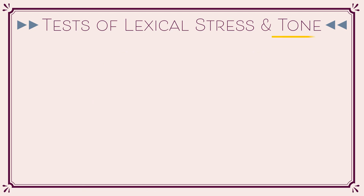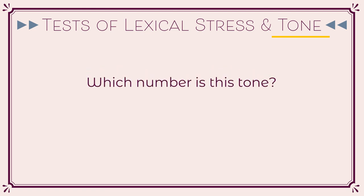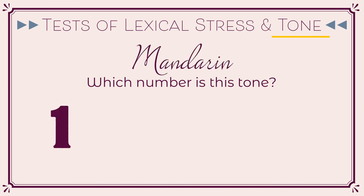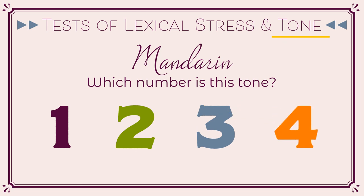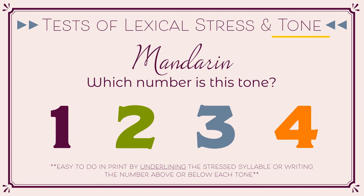For lexical tone only, ask children who have learned the number of each tone in tonal languages to say what number it is. In Mandarin, children know that the numbers 1, 2, 3, and 4 indicate different tones. These are also easy to do in print by underlining the stressed syllable or writing the number above or below each tone.